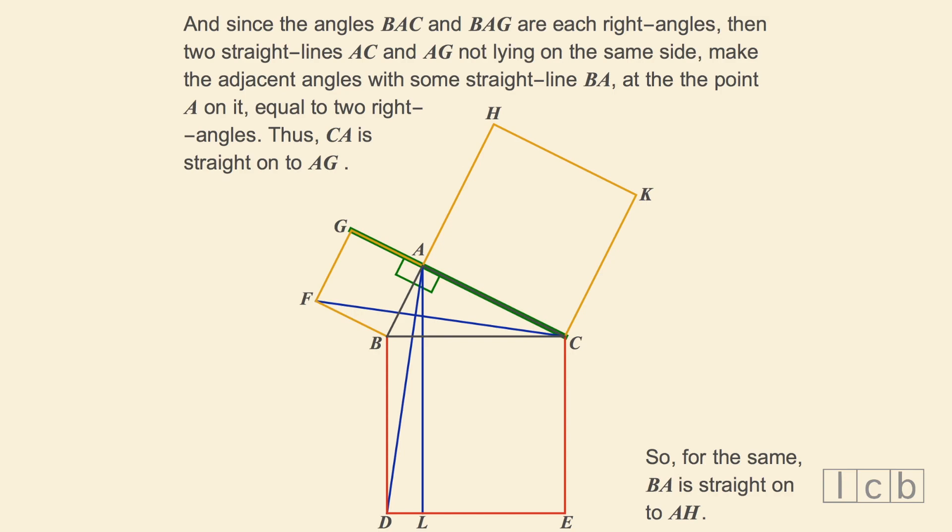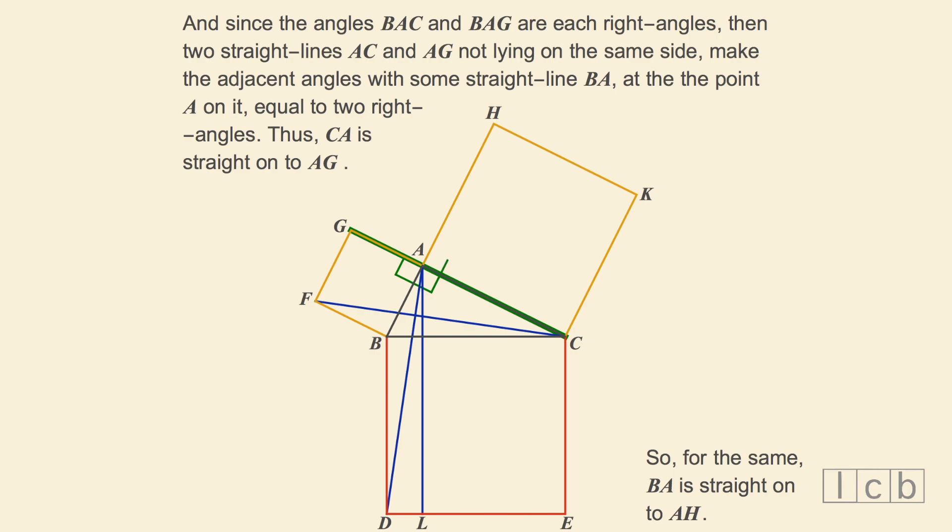Thus, CA is straight on to AG. So, for the same reason, BA is straight on to AH.